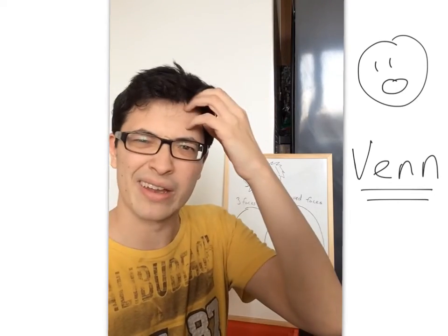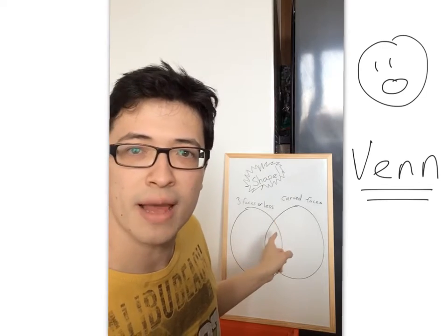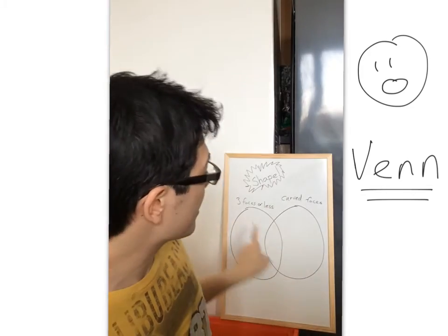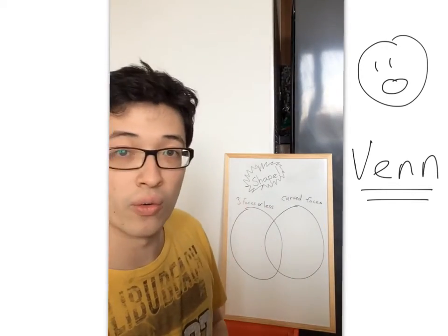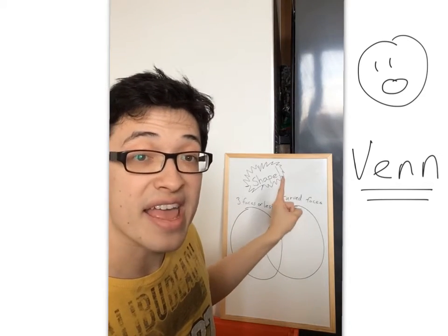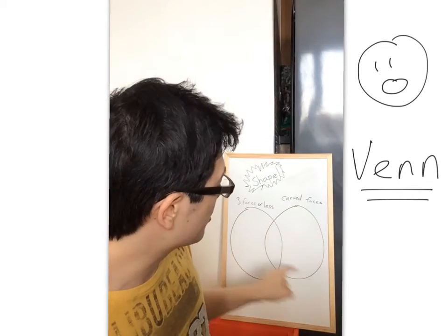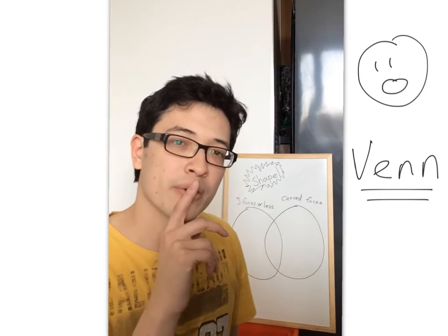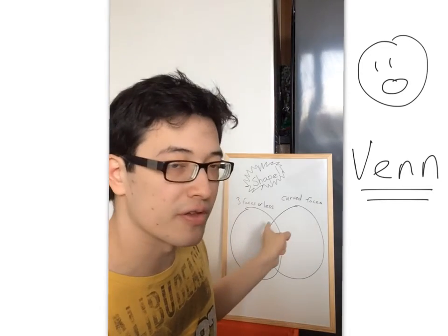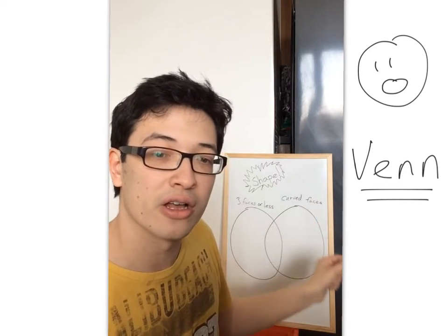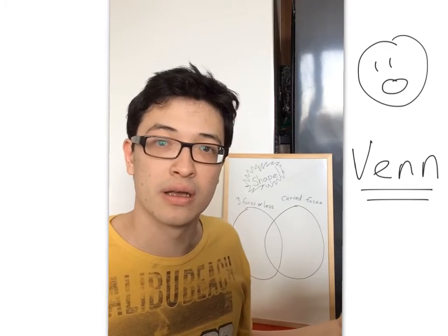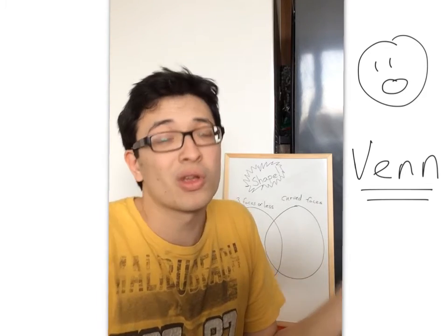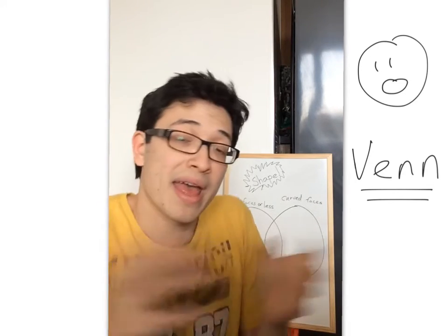Now, hold on a minute. This is really weird. Because in the middle, the circles overlap with each other, and we've got a little space in the middle. Well, that means that if a shape or an object has 3 faces or less and has a curved face, that means they go in the middle of our Venn diagram. But what do you think happens if a shape doesn't have 3 faces or less and doesn't have a curved face? Well, if it doesn't have any of those things, then we just throw it outside the circle because it doesn't fit in our Venn diagram.